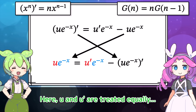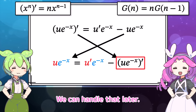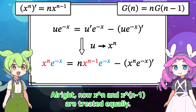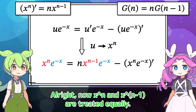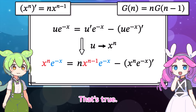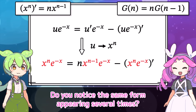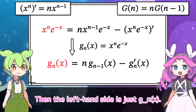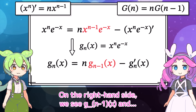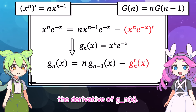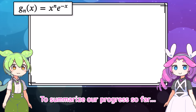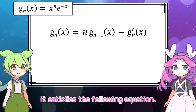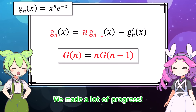If we replace u with x to the n, we get this equation. Now x to the n and x to the n minus 1 are treated equally. Let's simplify — do you notice the same form appearing several times? So let's define g_n of x like this. Then the left-hand side is just g_n of x. On the right-hand side, we see g_{n-1} of x and the derivative of g_n of x. To summarize: if we define a function g_n of x like this, it satisfies the following equation — a form very close to our target condition.